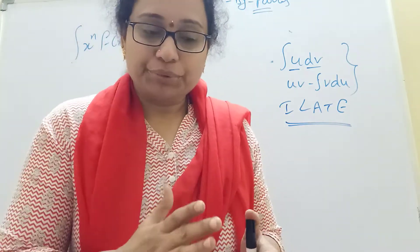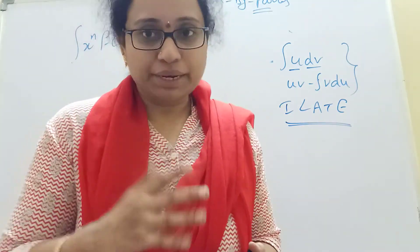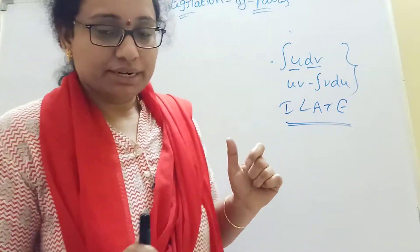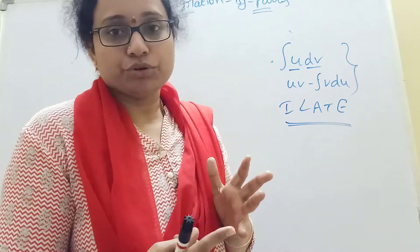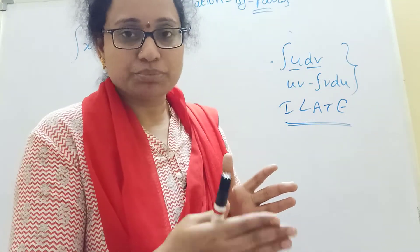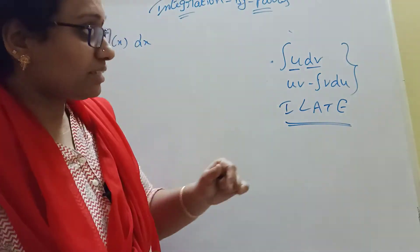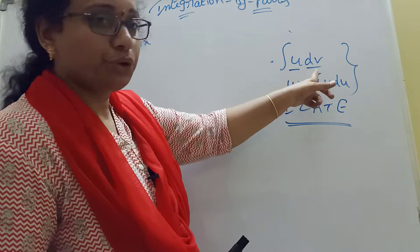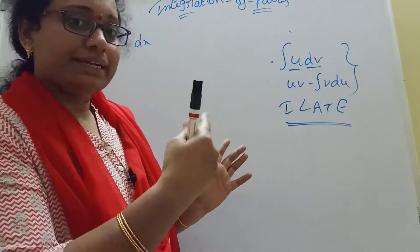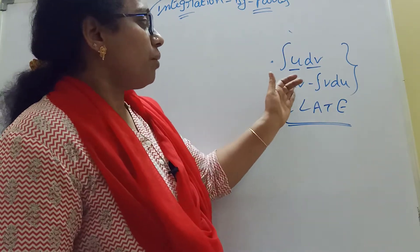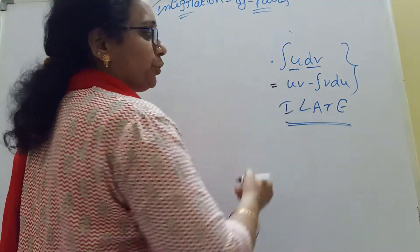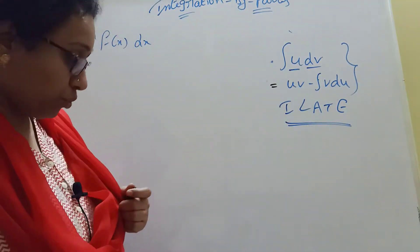This is an intermediate-level topic and it is very important for objective types. Integration by parts: the derivative of uv is uv' plus vu'. That is why the integration formula is called integration by parts. The formula is: integration of u dv equals uv minus integration of v du.